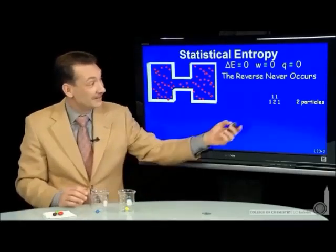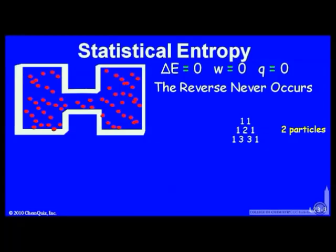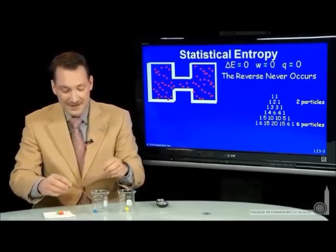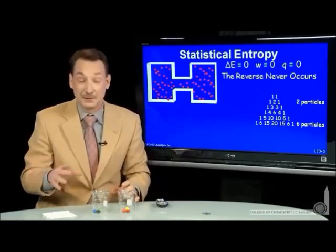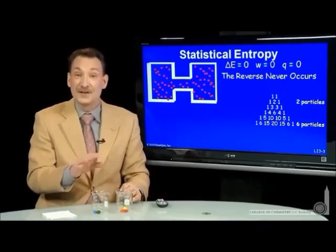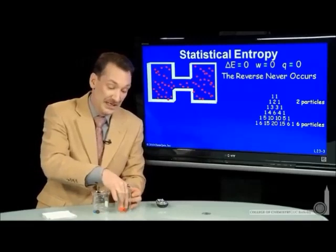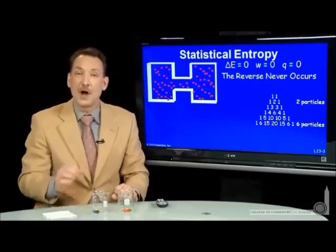You can expand Pascal's triangle easily by continuing that addition. One and zero make one, one and two make three, two and one make three, one and zero make one — that's the three-particle case, and you can continue to the four-, five-, and six-particle cases. Notice by the time I get to six particles, there are 20 ways to have particles three on either side. There are 20 ways to arrange this, versus the one way to have them all on one side.